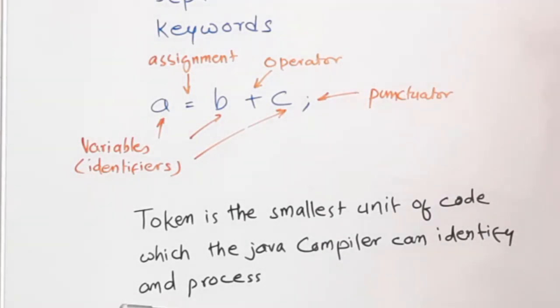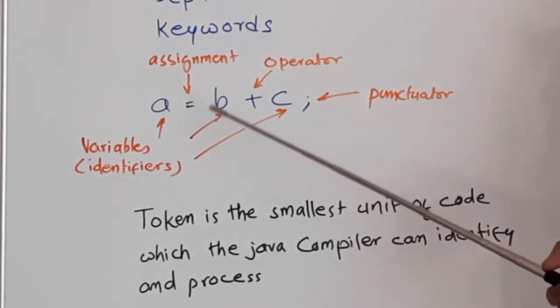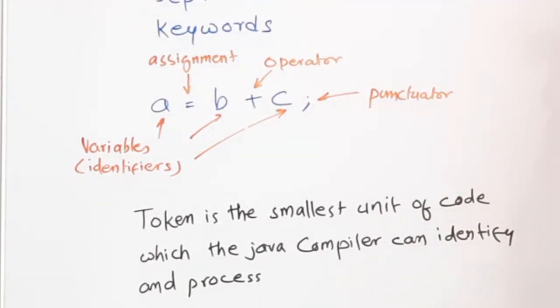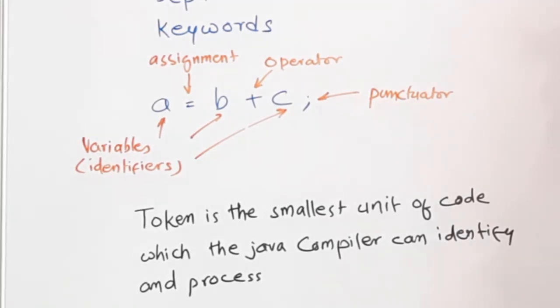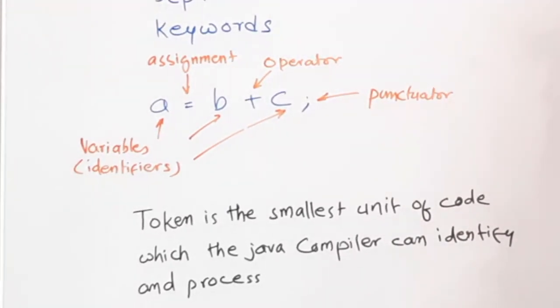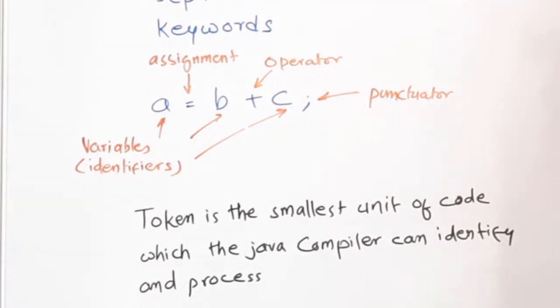Why are we calling it token? Because the classification here is made for the sake of the compiler. When you write a program, it will be compiled in a software called a compiler. So, for the compiler to understand what is being sent into it, the classification is done. That classification is called tokens. Token is the smallest unit that the compiler can identify and process.